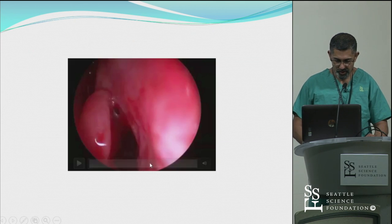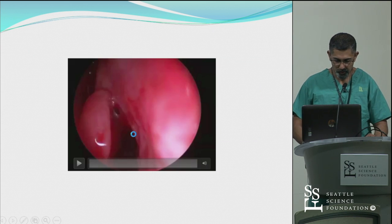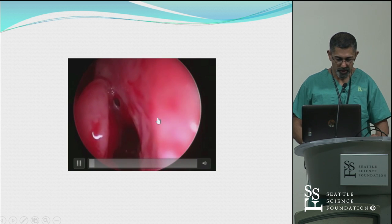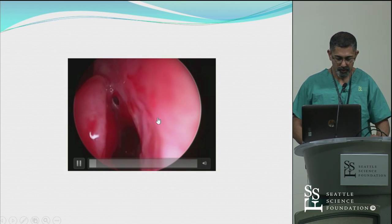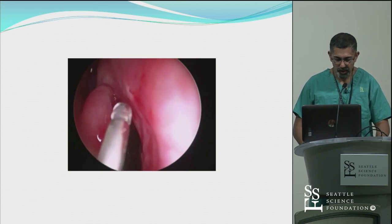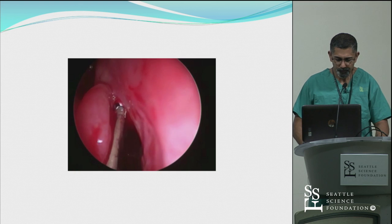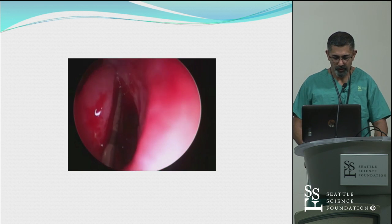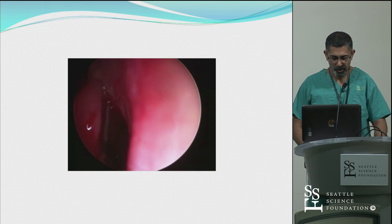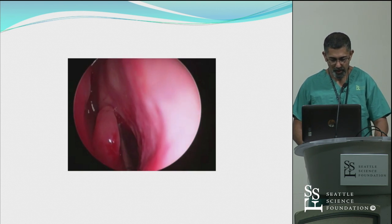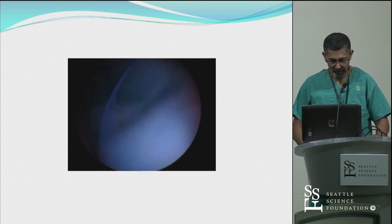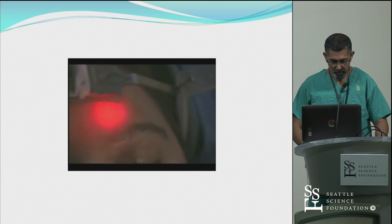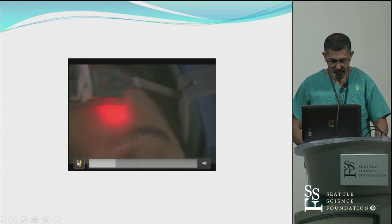This is an example of a very similar case — not the same one. You see the middle turbinate, left side, lateral nasal wall — there's that small opening. The probe with the light and the guide wire is going to go up there. You almost don't need it, but I'll stop this video here.